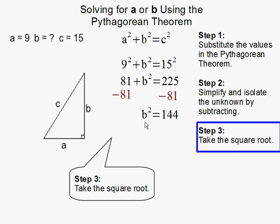So, to solve for B, I have to take the square root of B². And to balance the equation, I have to do the same on both sides of the equal sign. Square root of B² and square root of 144. Square root of B² is simply B, and square root of 144 is 12.